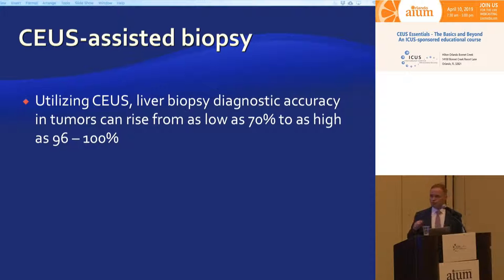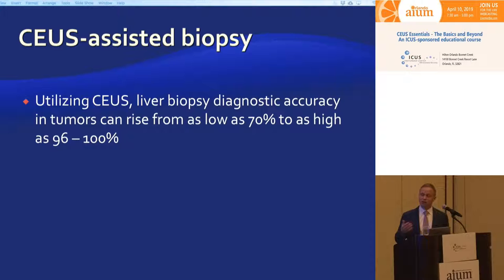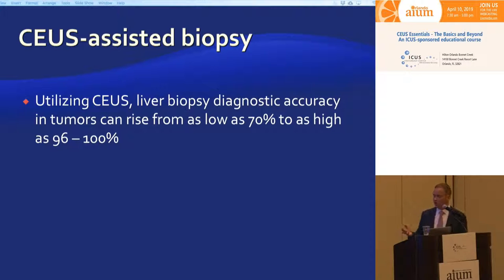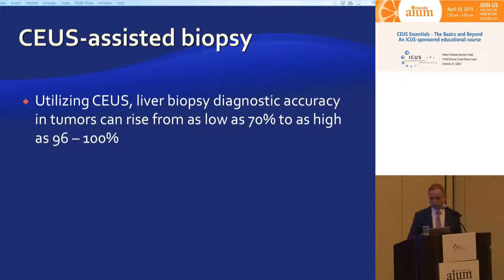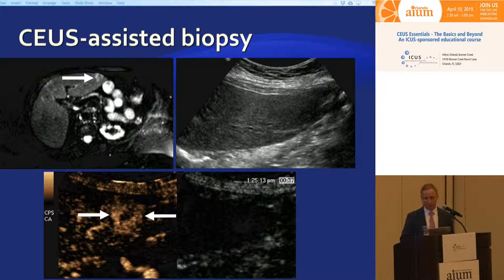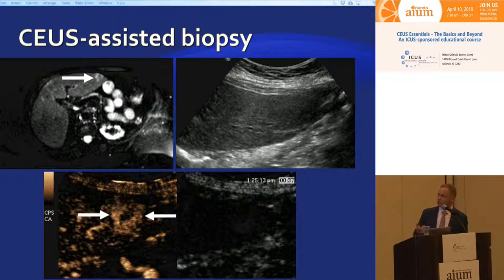We now have cytologists present with us in the room. We do touch preps of our core biopsies, and if we see inadequate samples in larger tumors we go straight to contrast-enhanced ultrasound. If we're getting nothing but normal liver in patients with small lesions, we do bubbles and then biopsy areas of abnormal contrast enhancement.